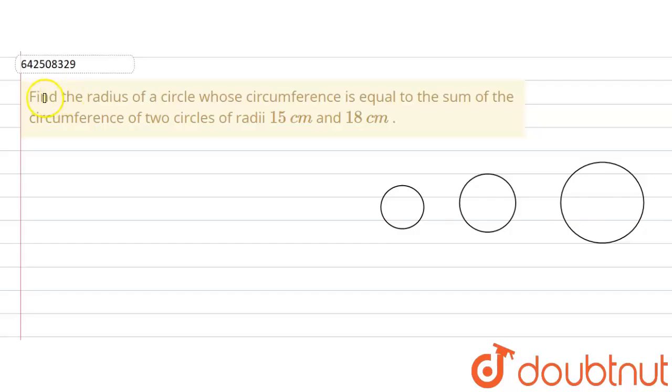The given question says that find the radius of a circle whose circumference is equal to the sum of the circumference of two circles of radii 15 cm and 18 cm.